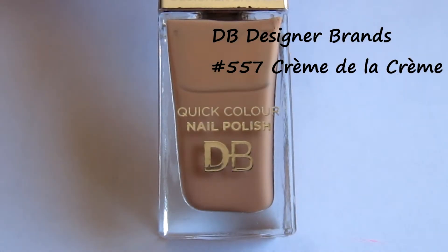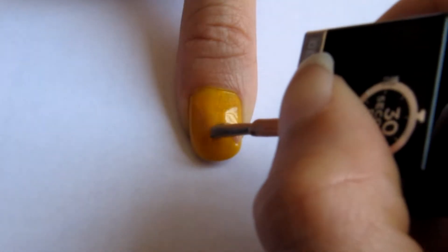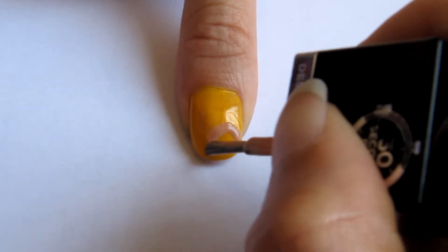Then use a beige color like this Designer Brands shade to draw a circle in the bottom corner of your nail. I find it easier to use a dotting motion.